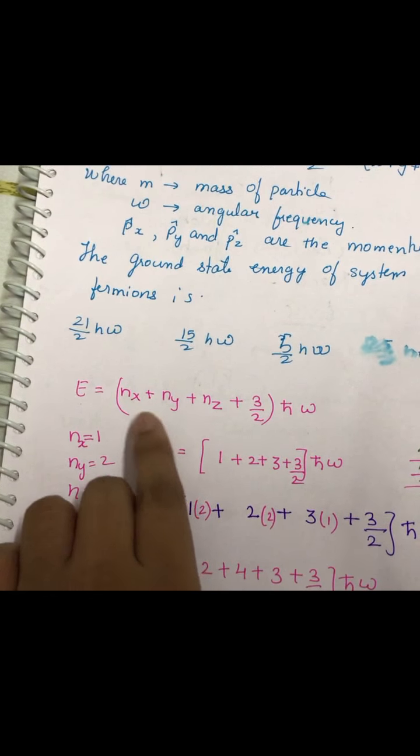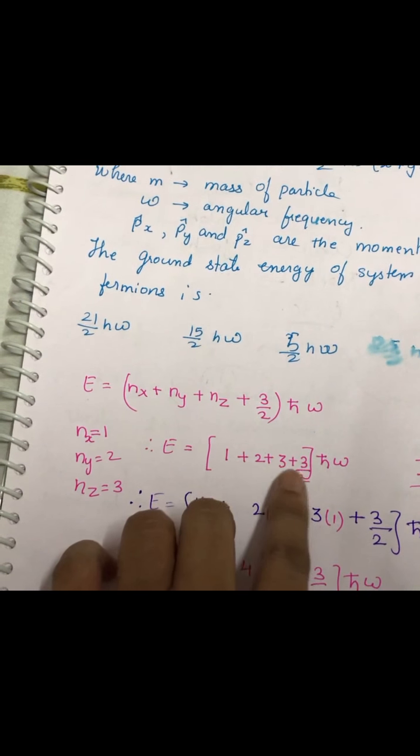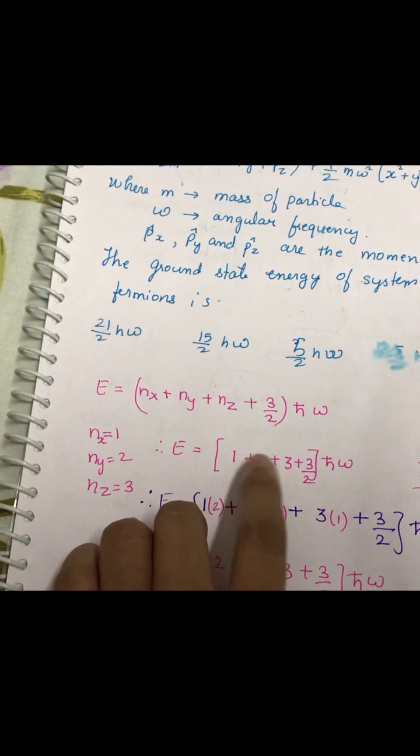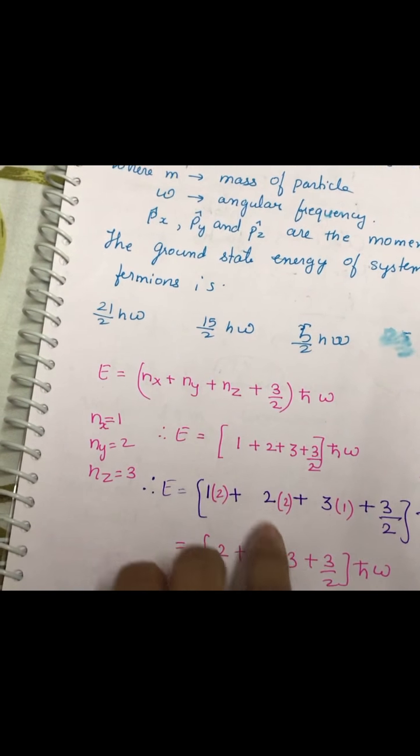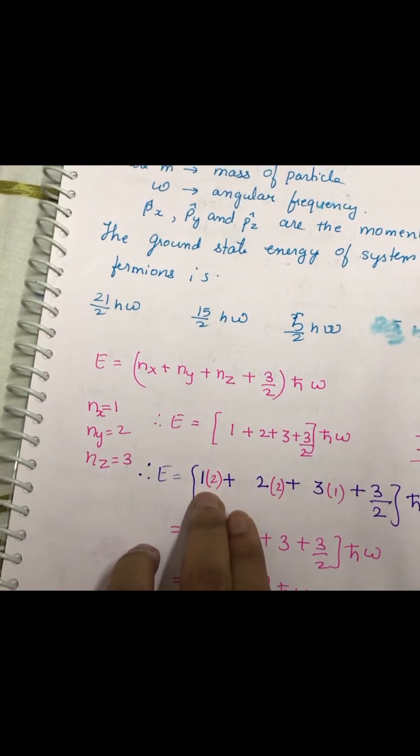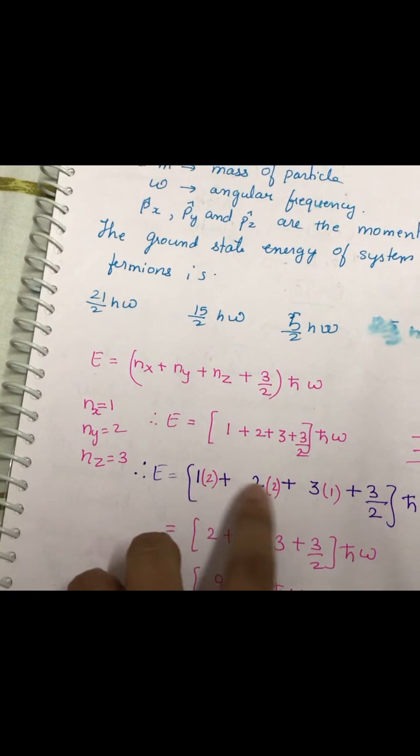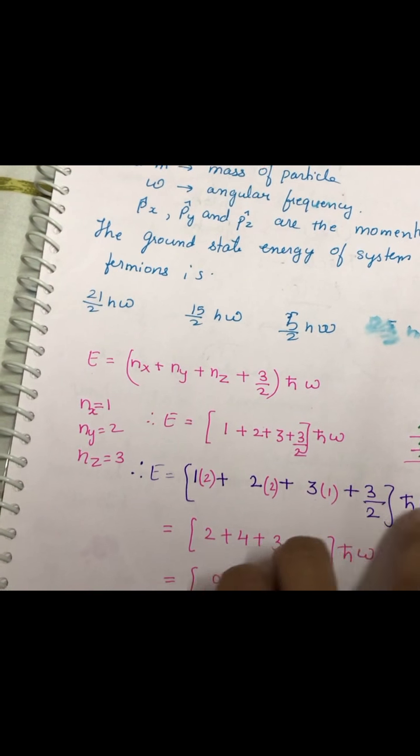So now when you substitute this value, you will find this to be the solution. But each Nx is multiplied by the number of fermions it possesses. Now Nx equals 1, it will be multiplied by 2 because it has got two fermions. So, 2 into 1 plus 2 into 2 plus 3 into 1 plus 3 by 2 and h-bar omega.